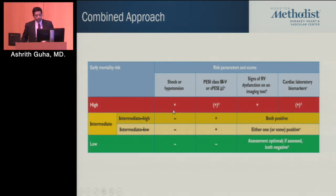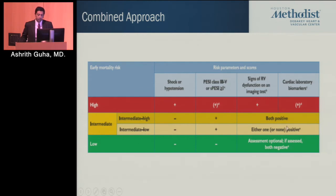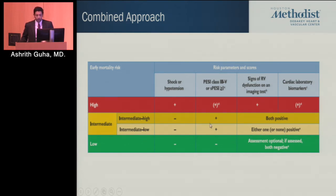In the presence of hypotension, patients are at high risk. If you have shock or hypotension that doesn't resolve within 15 minutes with volume resuscitation, you're at high risk. The key of using PESI class and signs of RV dysfunction is really in the intermediate group. These patients do not have hypotension, but if you are in PESI class 3 to 4 and both RV dysfunction and troponin are positive, you're in the intermediate-high risk group.